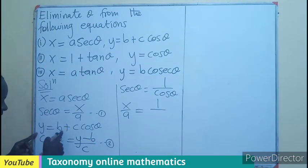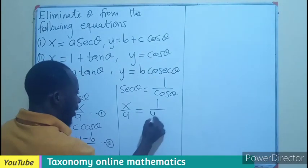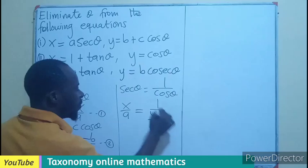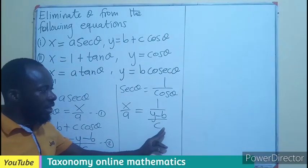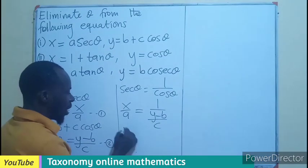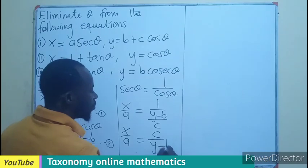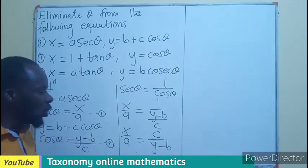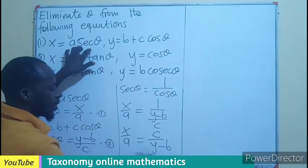And where is the cos theta? This is the cos theta representing Y minus B all over C. I believe this is a double division. So this will go up to multiply. So X over A equals C over Y minus B becomes the new expression for this whereby theta is eliminated.